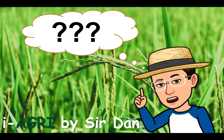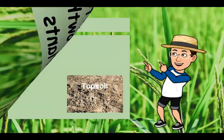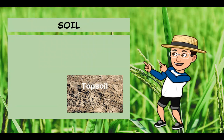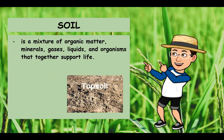Our topic is 'Factors Affecting the Growth of Plants.' There are three factors that affect the growth of plants. The first one is soil. Soil is a mixture of organic matter, minerals, gases, liquids, and organisms that together support life. Soil is also an important factor that affects crop production.